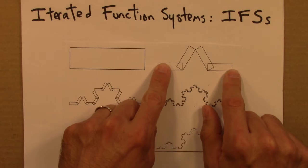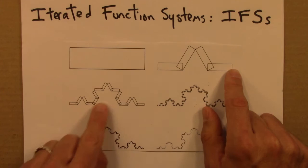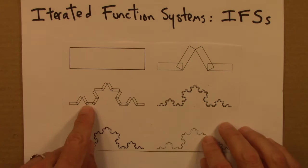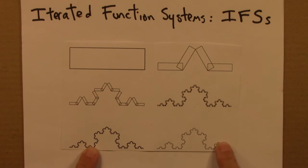Here we again do the exact same transformation. We take four copies, shrunk down, one, two, there, and then these two copies get rotated. And then we do that again, and again, and again. And we're left with our old friend, the Koch curve. This is one example of an iterated function system.